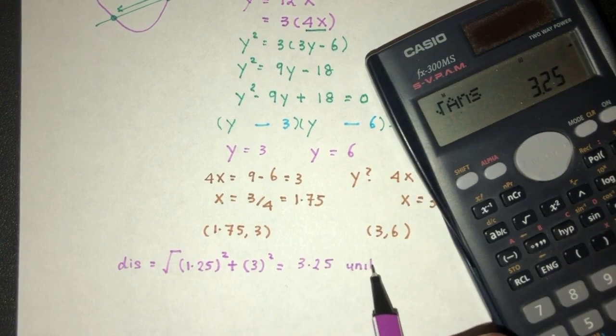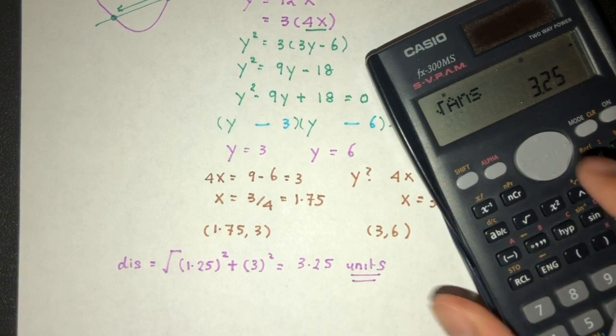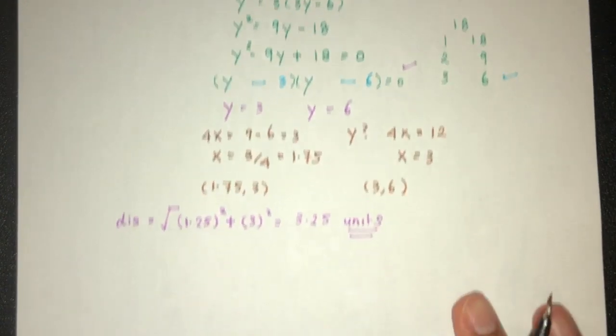Distance will be 3.25 units for the distance between the two points. Again, something if you guys don't know the formula here, let me write this down.